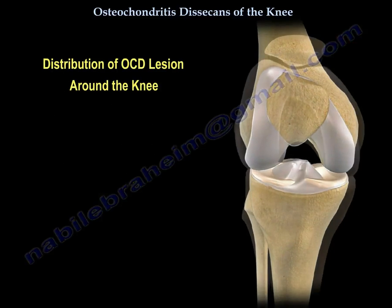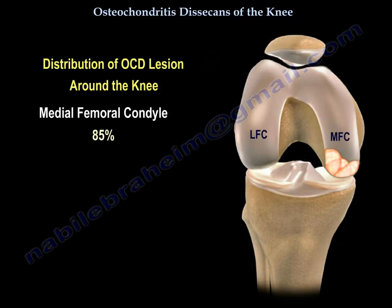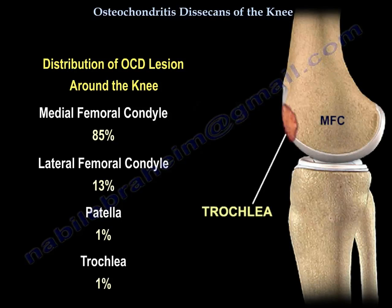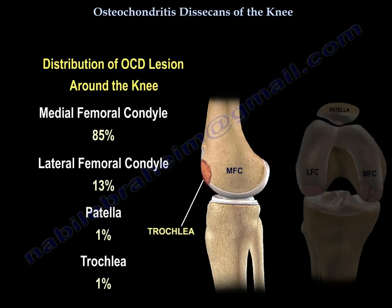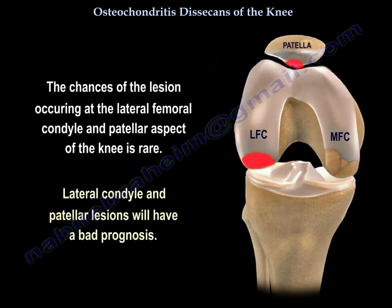This is the distribution of OCD lesions around the knee: medial femoral condyle 85%, lateral femoral condyle 13%, patella 1%, and trochlea 1%. Lesions occurring at the lateral femoral condyle and patellar aspect are rare and carry a worse prognosis.